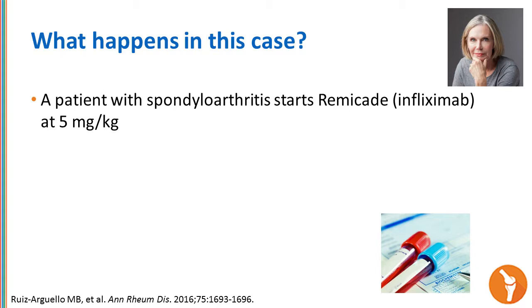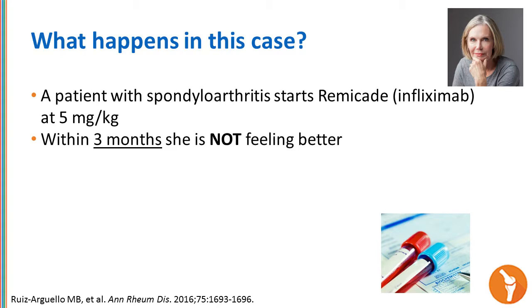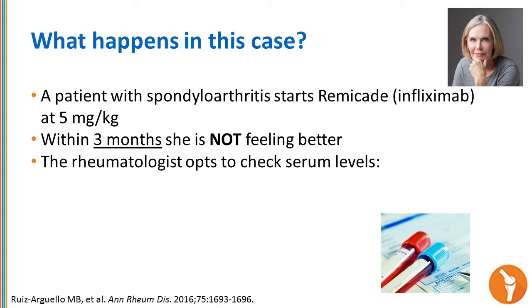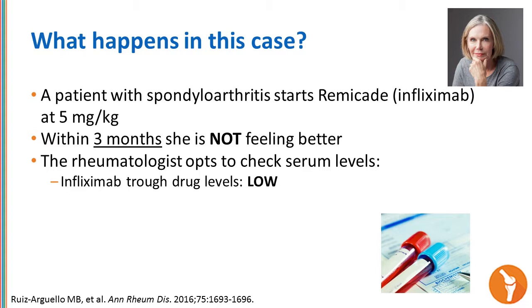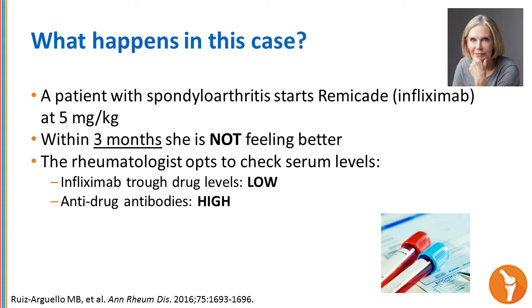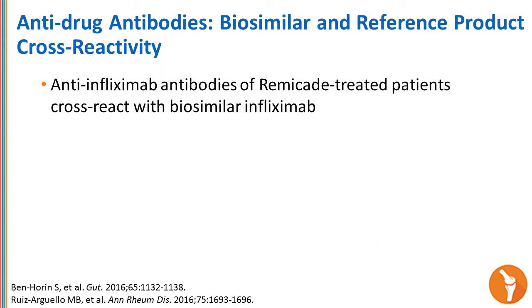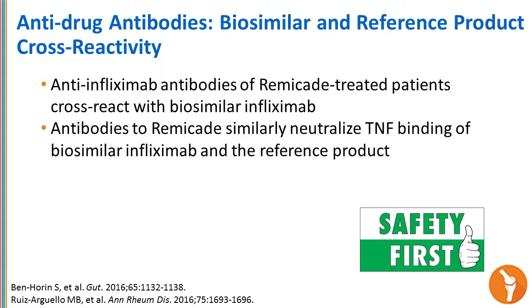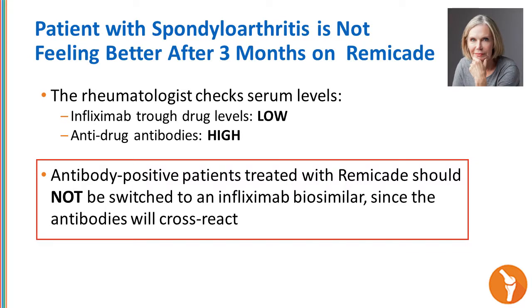This patient with spondyloarthritis starts Remicade at 5 mg per kg. Within three months, she is not feeling better. The rheumatologist opts to check serum levels and finds that the infliximab trough level is low but the anti-drug antibody level is high. Critically: anti-infliximab antibodies of Remicade-treated patients will cross-react with biosimilar infliximab—whether Remsima or Inflectra. Antibodies to Remicade will similarly neutralize TNF binding of either biosimilar, so antibody-positive patients treated with Remicade should not be switched to an infliximab biosimilar because of this cross-reactivity.